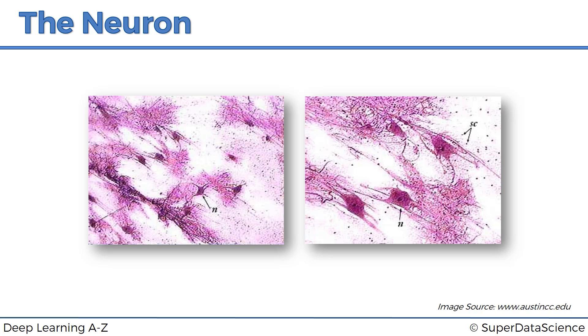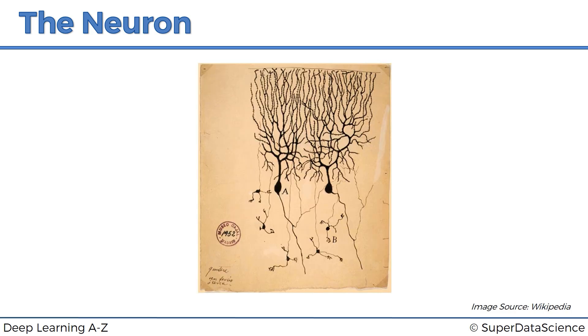So our challenge right now, our very first step to creating artificial neural networks, is to recreate a neuron. So how do we do that? Well, first of all, let's have a closer look at what it actually is. This image was first created by a Spanish neuroscientist Santiago Ramón y Cajal in 1899.